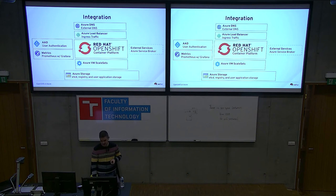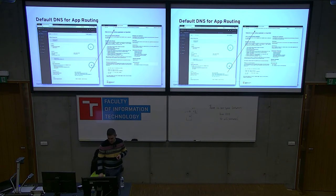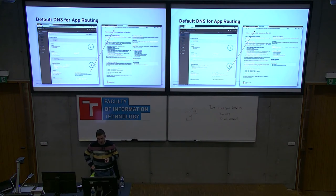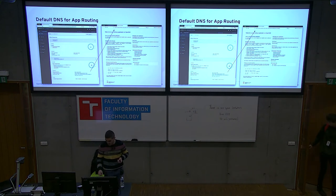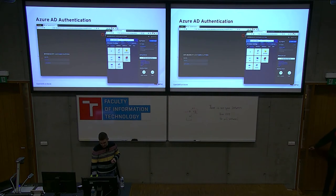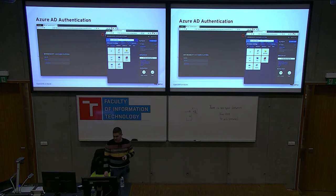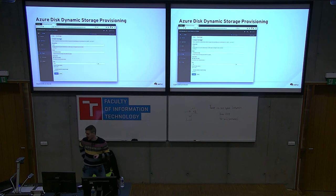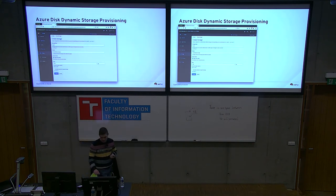By default your cluster gets DNS routing, so in your web console you can go directly to your applications — this is based on Azure DNS. We use AAD as shown in the web console. For storage, Azure Disk dynamic provisioning gives customers SSDs by default.